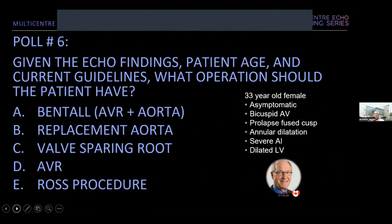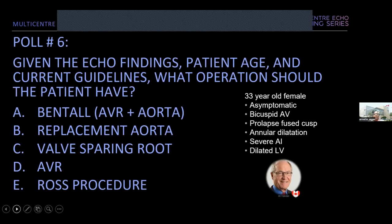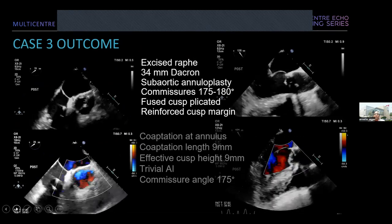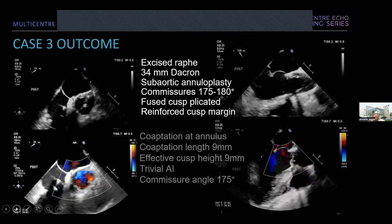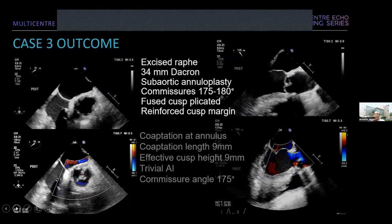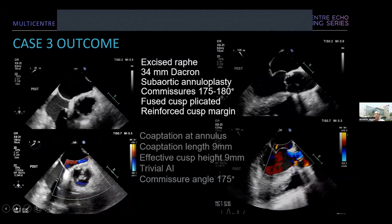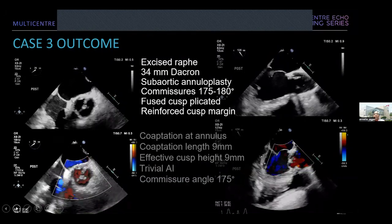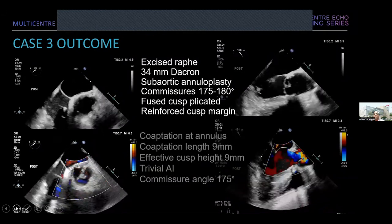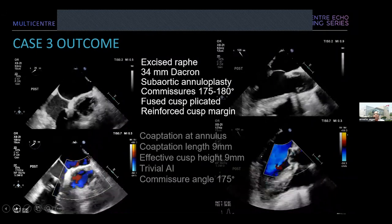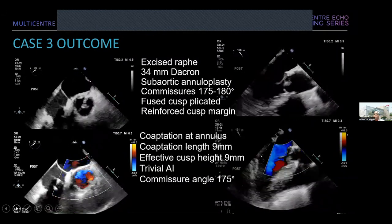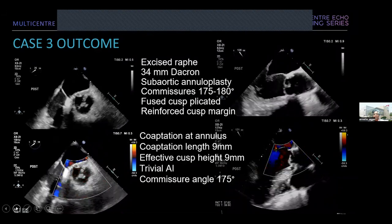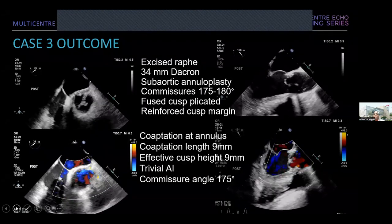This patient underwent a valve sparing procedure. The surgeon excised the raphae, placed a 34 mm Dacron graft, performed a sub-aortic annuloplasty to address the annular dilatation, positioned the commissures at 175–180 degrees, plicated the fused cusp, and reinforced the cusp margin.